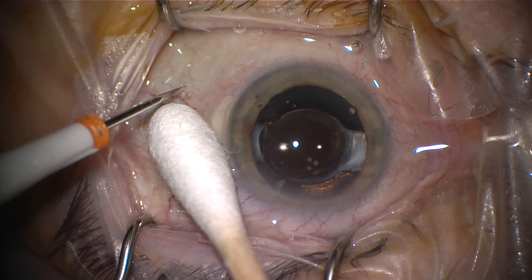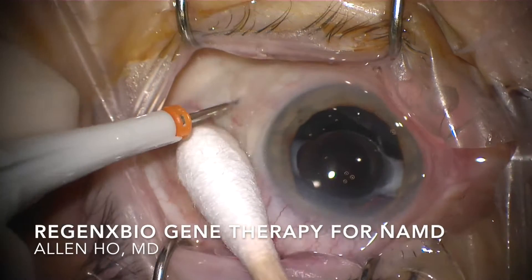This surgical video shows the steps in delivering subretinal gene therapy to a patient with neovascular AMD. In this Regenex trial, a transgene is delivered in the subretinal space which encodes for an anti-VEGF protein, therefore creating an ocular biofactory in the eye to control wet AMD.